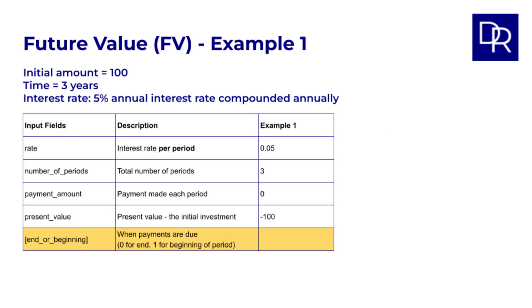Then the last field is end or beginning. The brackets mean that this is an optional field. Here you can specify when any payments are due, 0 for the end of each period, 1 for the beginning of each period. Here as we said there are no regular payments, so this setting does not matter anyway, so we'll just leave it blank.